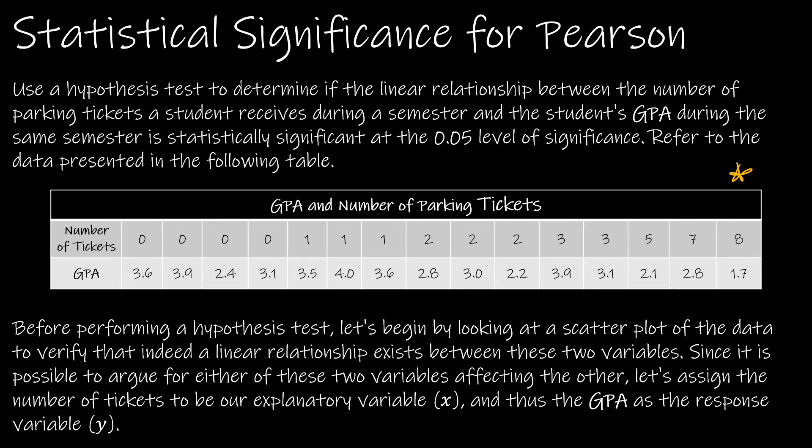Now there's really no dependence of one variable upon the other. I can't say the number of tickets would affect GPA or the GPA would affect the number of tickets. So we're just going to randomly assign them. Let's let the number of tickets be X, the explanatory variable, and the GPA be Y, the response variable. When there's no relationship that is clear, it's okay to choose one.